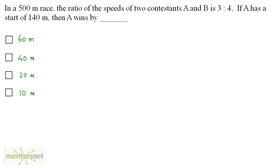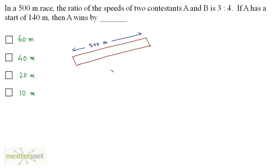In a 500 meters race, the ratio of the speeds of two contestants A and B is 3 to 4. If A has a start of 140 meters, then A wins by how many meters? A starts 140 meters ahead, so A only needs to cover 500 minus 140 equals 360 meters. B will have to cover the whole 500 meters.